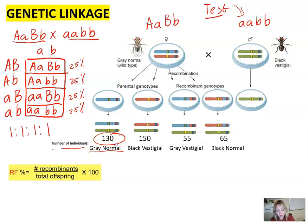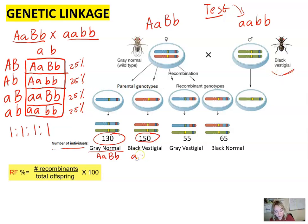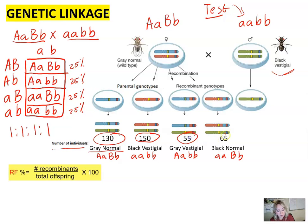We have a lot of gray normal — genotype AaBb, just like the parent — and also larger numbers of black vestigial, exactly like the other parent. We call these parental types. Then we get two types of recombinants: gray vestigial (AaBb with little b little b) and black normal (little a little a, BbLb). These numbers are much lower, so we have fewer recombinants compared to parental types. This is definitely not a 1:1:1:1 ratio, which indicates linkage.